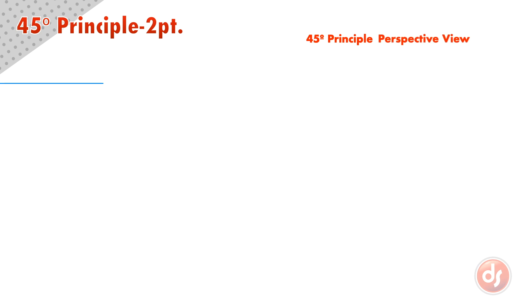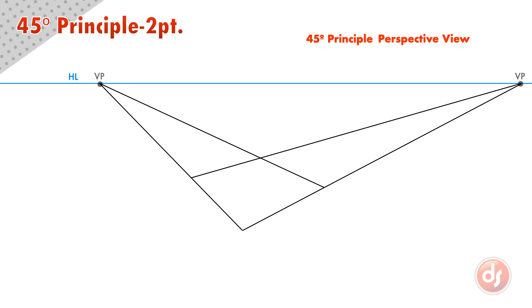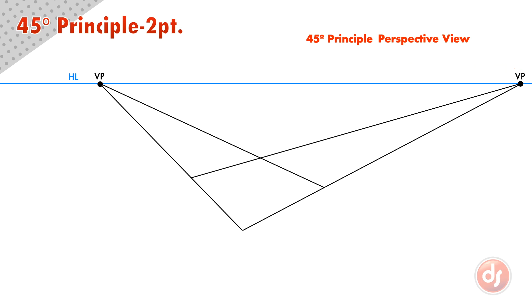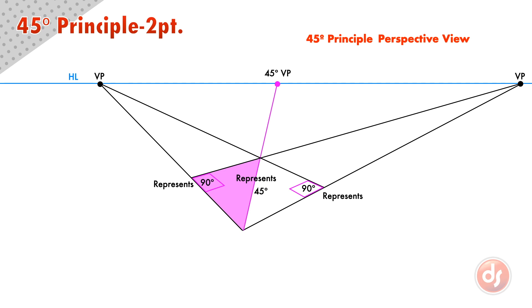Now if we look at the same square in two-point perspective, we see the parallel lines vanish to points on the horizon, because of the principle of convergence, which is the core idea behind linear perspective. This means that the corners of the box are not truly 90 degrees, but represent a 90-degree angle in perspective. A line that goes through the corners of the box represents a 45-degree angle in perspective. Taking that line to the horizon gives us a 45-degree vanishing point, because the 45-degree principle remains the same when drawn in perspective.